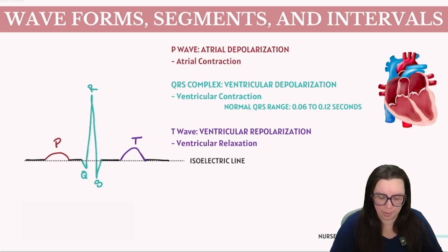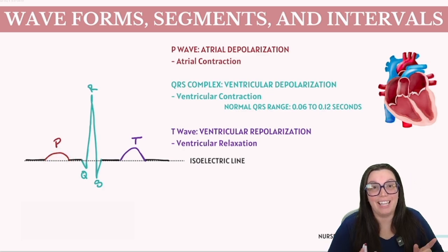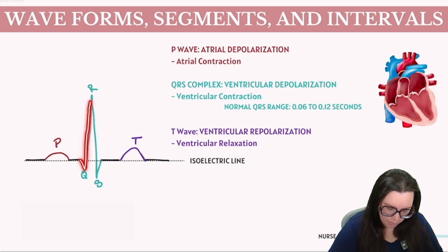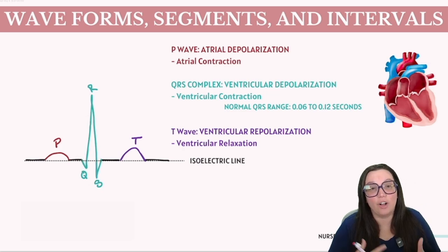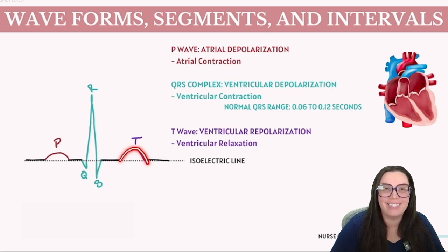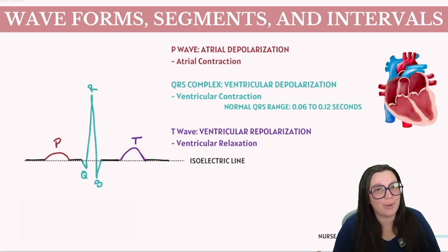The first initial minor peak that you're going to see on your ECG is called the P wave. It then proceeds to our next prominent formation called the QRS complex, and it ultimately concludes at the next subsequent minor peak, which is known as the T wave. We're going to explore each of these in detail, starting with the P wave.